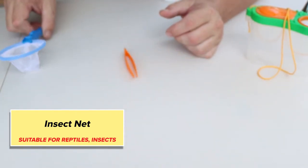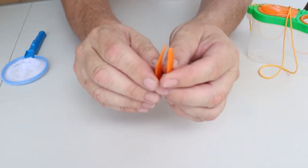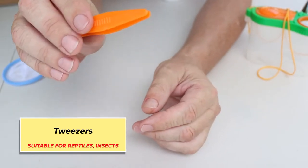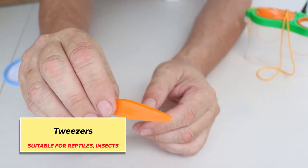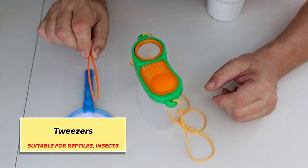It comes with a net and it comes with a pair of tweezers. So in case your kids are afraid to pick up bugs or you don't know if the bug is safe or not, you have a way to catch the bugs to keep them.